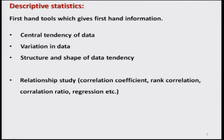We start our lecture. You may recall that when we started the discussion on descriptive statistics, first we took the aspect of central tendency of the data and we discussed different measures like mean, median, harmonic mean, geometric mean and so on. The next step was to study the variation in the data, and for that we had taken different tools like variance, mean deviation, quartile deviation, etcetera.